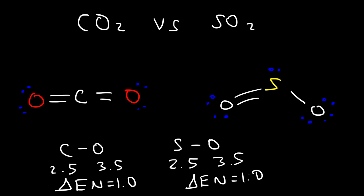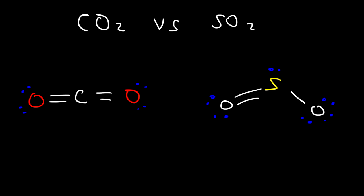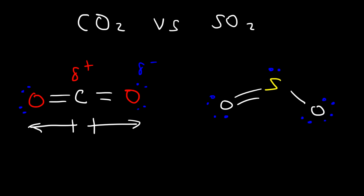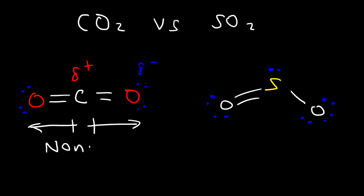But now, are the two molecules polar? We need to draw the dipole moments of the bonds. To draw the dipole moment, it's going to point from the partially positive carbon atom towards the partially negative oxygen atom — the arrow always faces the electronegative atom. Notice that these two arrows go in opposite directions; they cancel out. Therefore, there is no net dipole moment in the CO2 molecule, which means that it's non-polar.